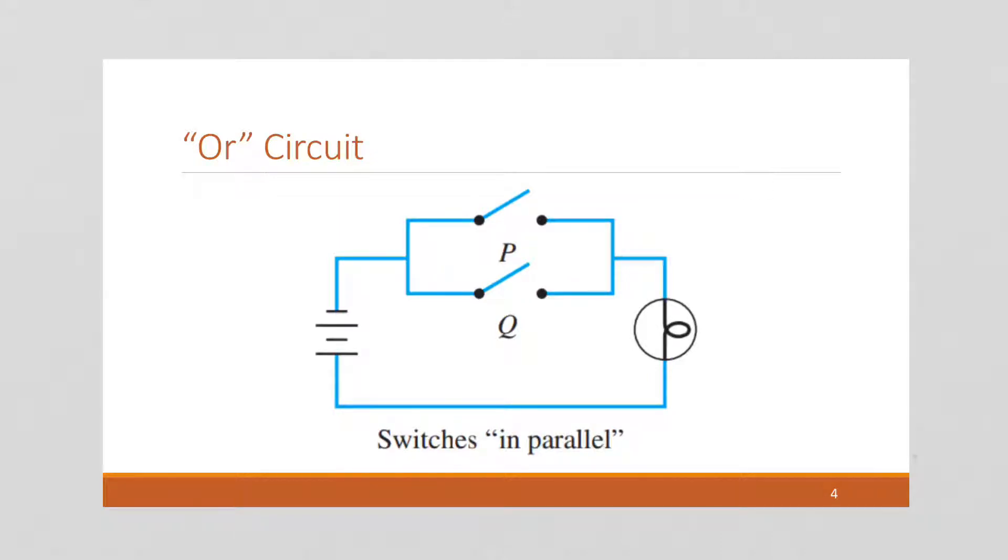Here's an OR circuit. We have switches in parallel. If just one of these switches is closed, let's say we close P, then we have a circuit. We've got power coming through P to the light bulb and back around to the battery, which is a closed circuit, and the light bulb turns on.